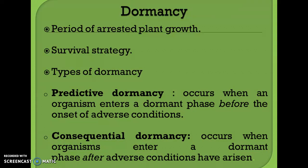Dormancy is divided into two types: predictive dormancy and consequential dormancy. In the case of predictive dormancy, it occurs when an organism enters a dormant phase before the onset of adverse conditions. In the case of consequential dormancy, it occurs when an organism enters a dormant phase after the adverse conditions have arisen.